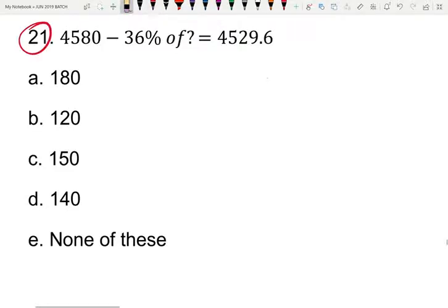See, twenty-first question. The problem states: 4580 minus 36% of some number equals 4529.6.